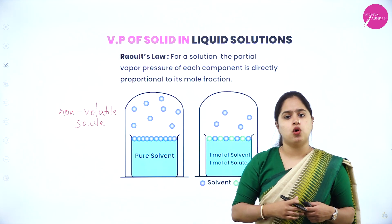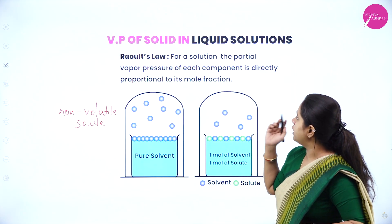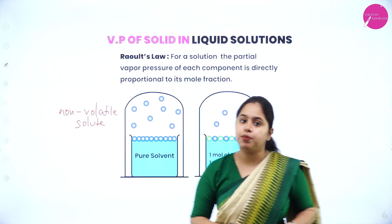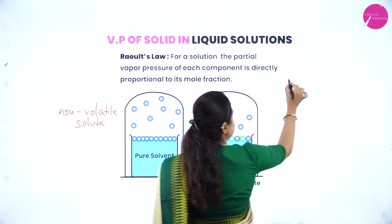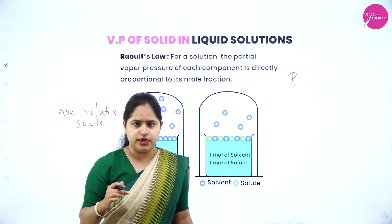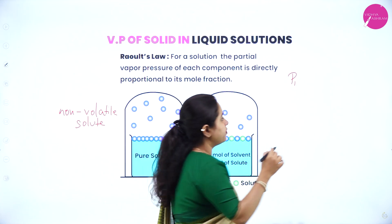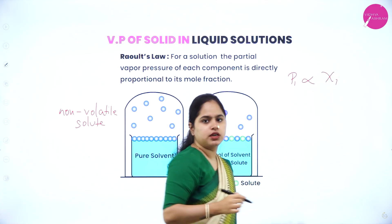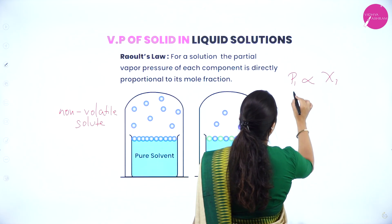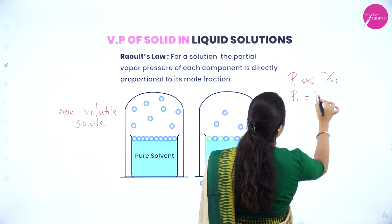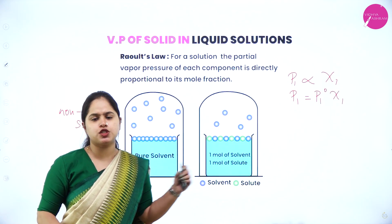According to Raoult's law, which we studied in the last session, the partial vapour pressure of each component is directly proportional to its mole fraction. So for component 1, the partial pressure P₁ is directly proportional to its mole fraction χ₁. Removing the proportionality, we write P₁ = P₁⁰ × χ₁. This is Raoult's law.